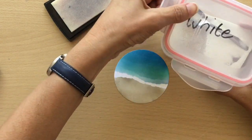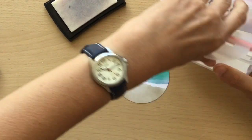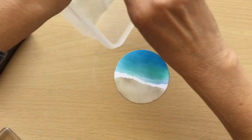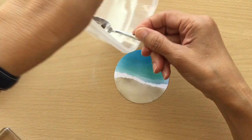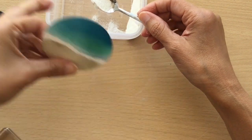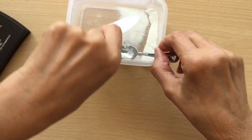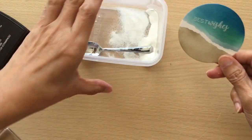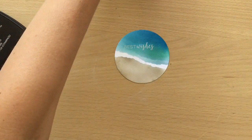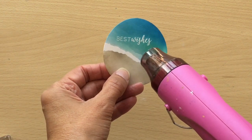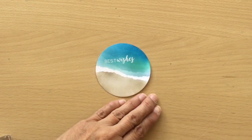I've got my white embossing powder. I always stick these in a little tupperware pot and that way you don't waste any, especially when I'm doing my classes. There we go, there's the best wishes so I'm going to heat emboss that now. I'm actually quite pleased with that, that looks quite good.